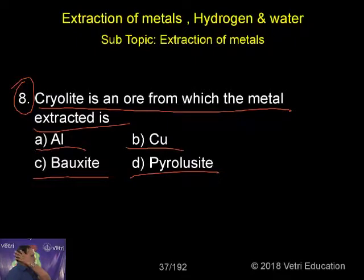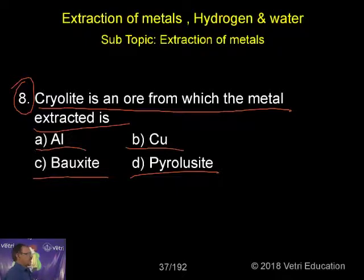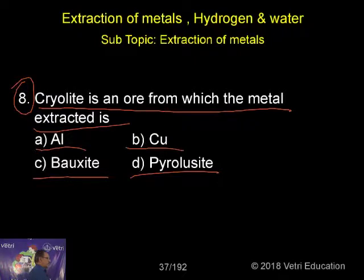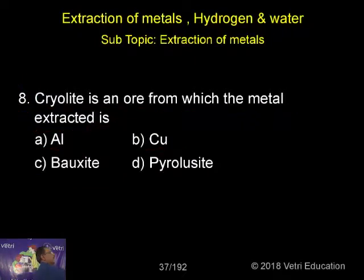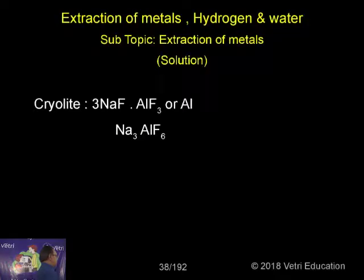So cryolite is an ore from which the metal is extracted. You can follow that A and B are the only metals, but the other two are again ores, so you do not consider those. Only either A or B will be the correct answer.